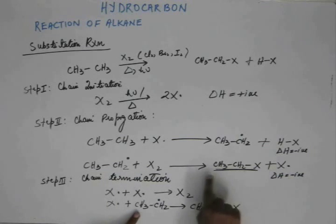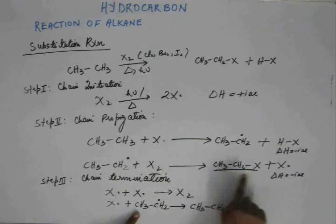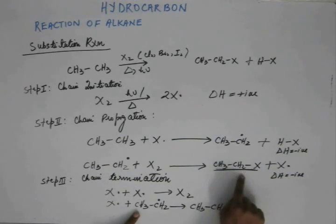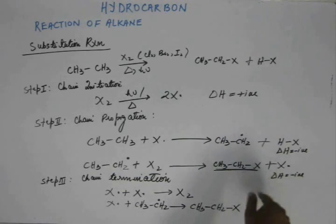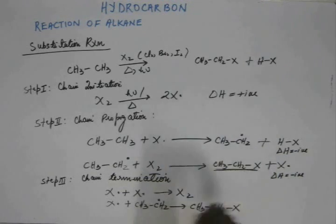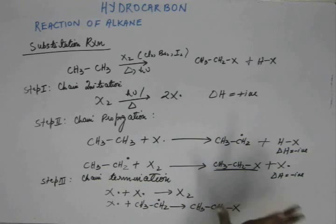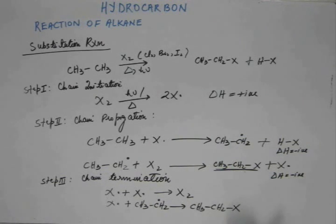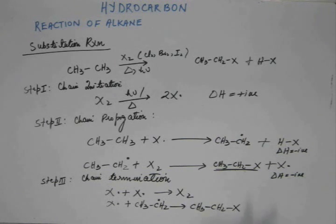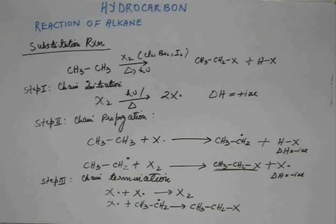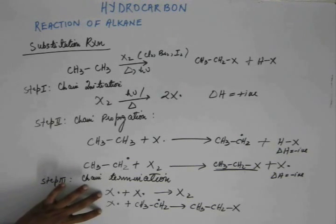But here we have only haloethane and no X-dot produced, because this X-dot is clubbed with the ethyl free radical. This also gives one molecule of product, but it terminates the reaction — because the ethyl free radical must react with molecular halogen. When that happens, we have haloethane and also a halogen free radical, which would perpetuate the reaction further. But when X-dot combines with the ethyl radical, no X-dot is produced and there will be no further reaction. So these two steps try to terminate the reaction and are not desirable.